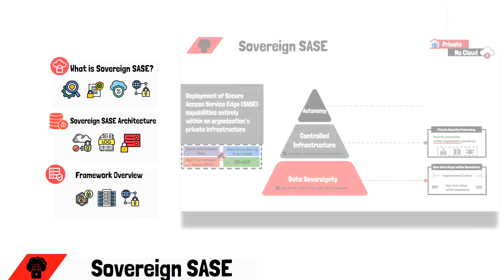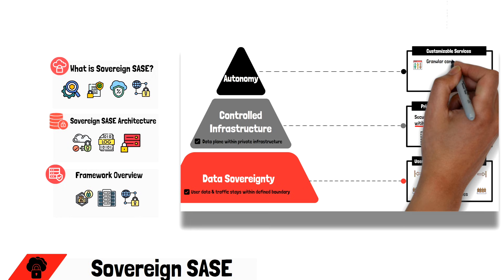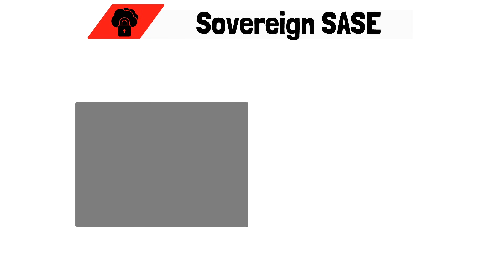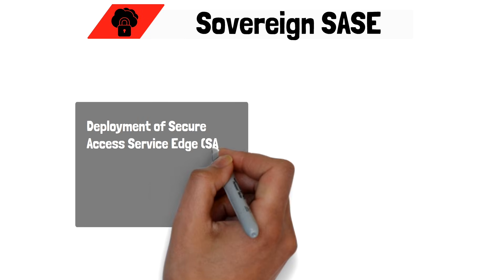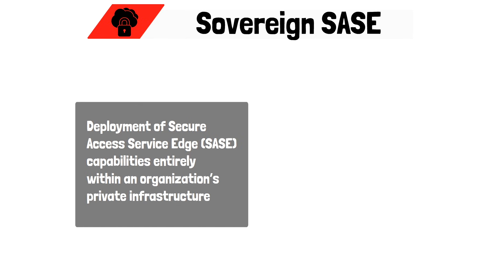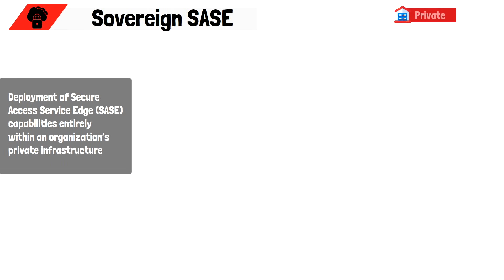This is why a new type of SASE model called Sovereign SASE has emerged, giving organizations a new way to deploy SASE completely within their private infrastructure and avoiding the cloud altogether. In this video, we're going to break down what Sovereign SASE is and how its architecture is designed around data sovereignty principles and privacy. When we talk about Sovereign SASE, we're referring to the deployment of SASE capabilities entirely within an organization's private infrastructure, with the primary goal of keeping user traffic, data, and logs completely within the network premise and off the vendor's cloud.